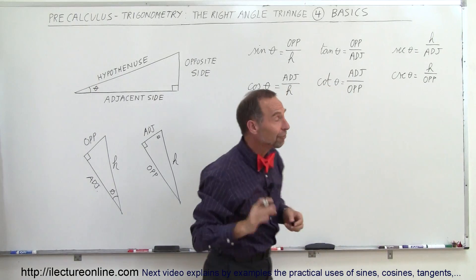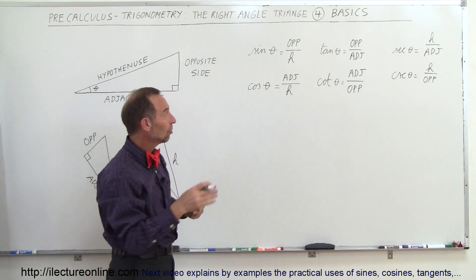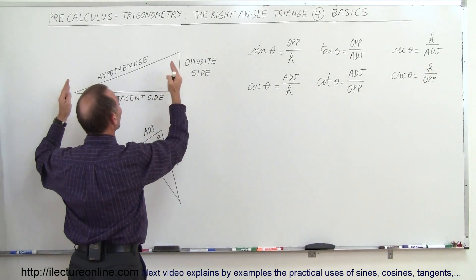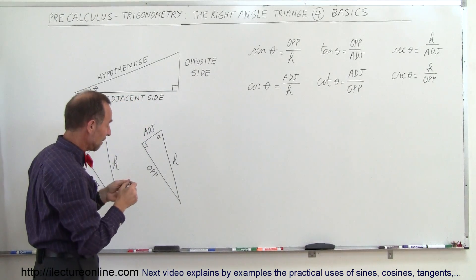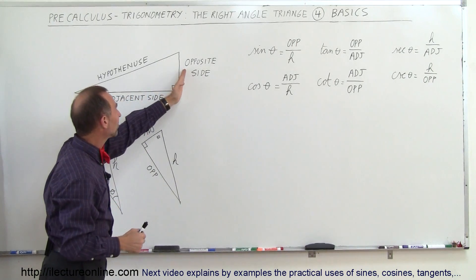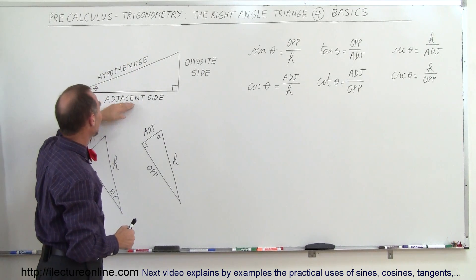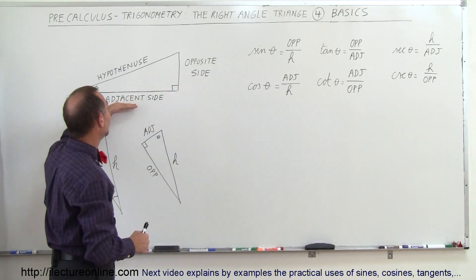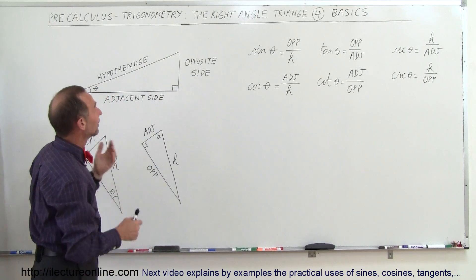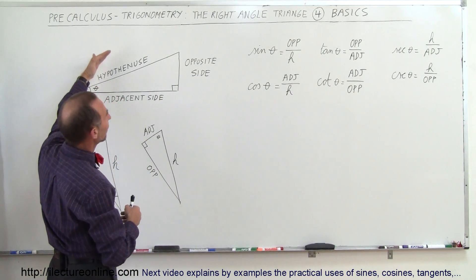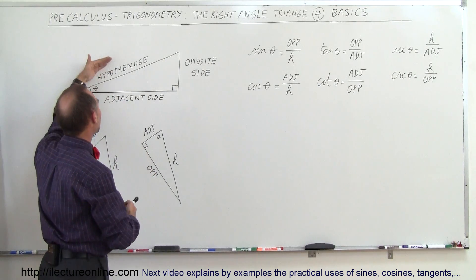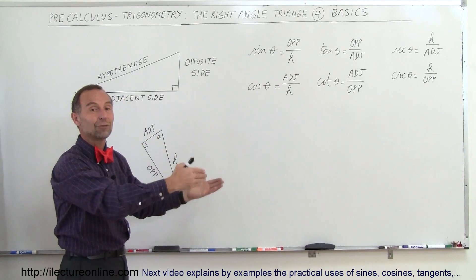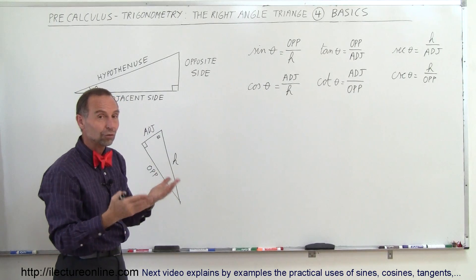That is how the six trigonometric functions — the sine, cosine, tangent, cotangent, secant, and cosecant — are defined simply by the ratios of the sides of a right angle triangle. To summarize: sine is opposite over hypotenuse; cosine is adjacent over hypotenuse; tangent is opposite over adjacent; cotangent is adjacent over opposite; secant is hypotenuse over adjacent; and cosecant is hypotenuse over opposite. That's why we defined them — to relate the various ratios of the triangle's sides through trigonometric functions.